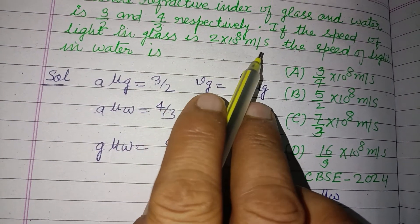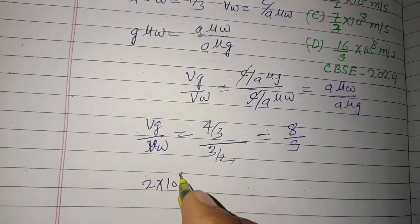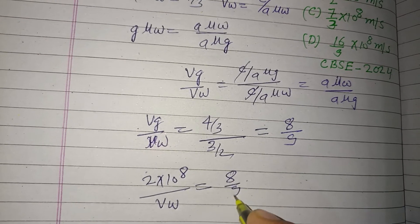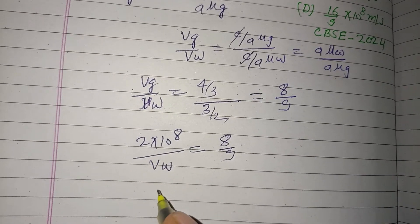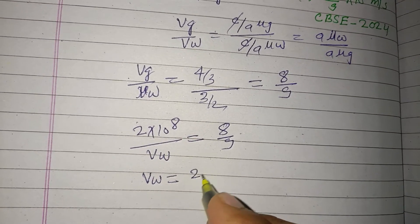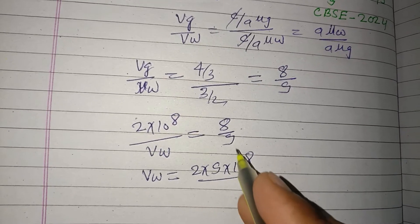And vg is given to us 2 into 10 to the power 8 meter per second. So 2 into 10 to the power 8 meter per second over velocity in water. This is 8 over 9, and on cross multiplication we got vw equal to 2 into 10 to the power 8 times 9 over 8.